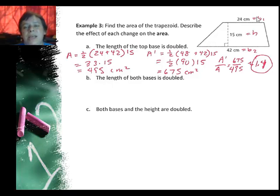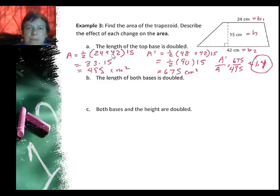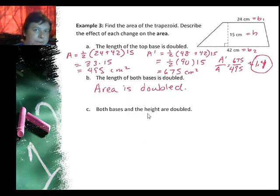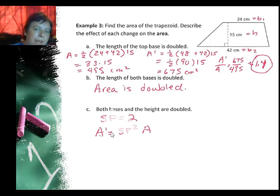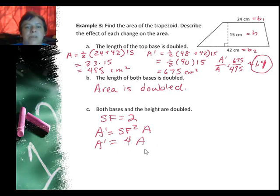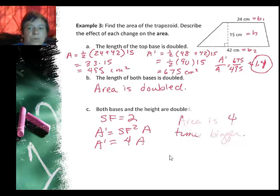If I double the length of both bases, that makes the sum in the formula twice as big, so a factor of 2 comes out of the base area — the area doubles. If both bases and height are doubled, that's a proportional change with scale factor 2. Remember you use scale factor squared for area: 2² = 4, so the area is four times the original.